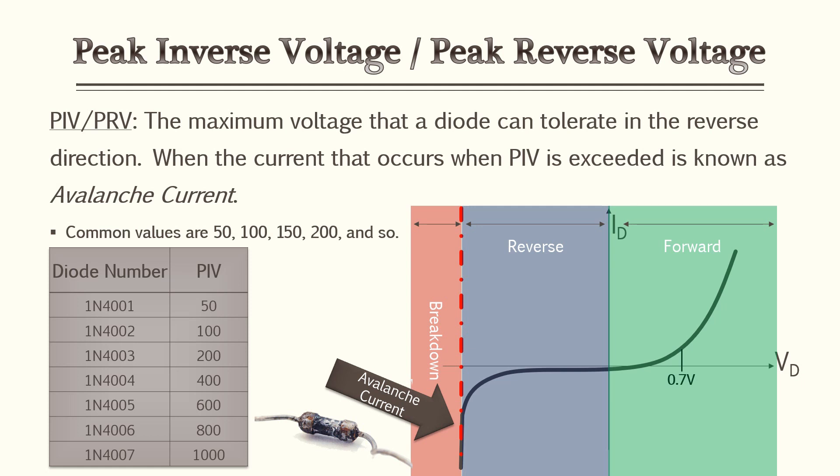The peak inverse voltage is typically rated in increments of 50 — so 50, 100, 150, and so on. Looking at common diodes from their data sheets: the 4001 has a peak inverse voltage of 50 V, the 4002 has 100 V, and so on. We'll go over one of these in an example problem.